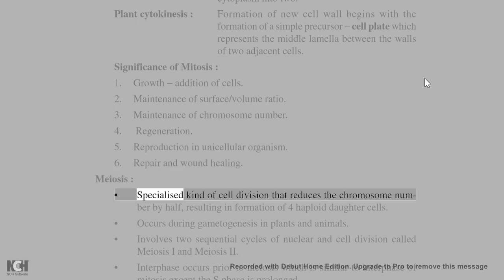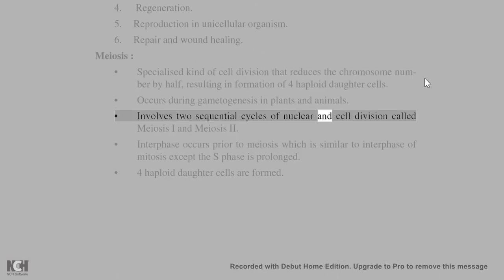Meiosis: Specialized kind of cell division that reduces the chromosome number by half, resulting in formation of four haploid daughter cells. Occurs during gametogenesis in plants and animals. Involves two sequential cycles of nuclear and cell division called meiosis I and meiosis II.